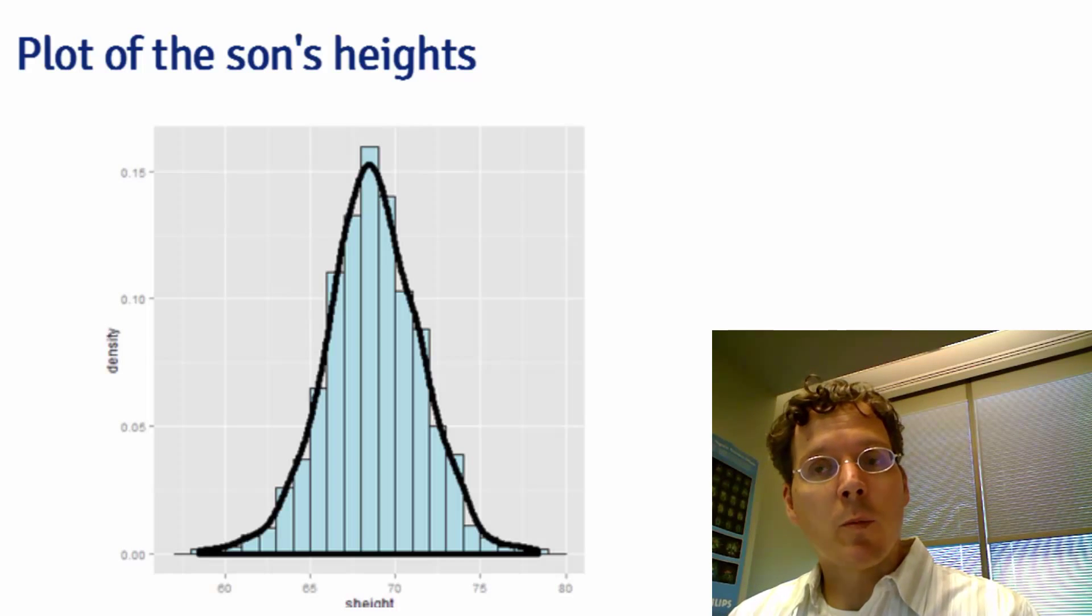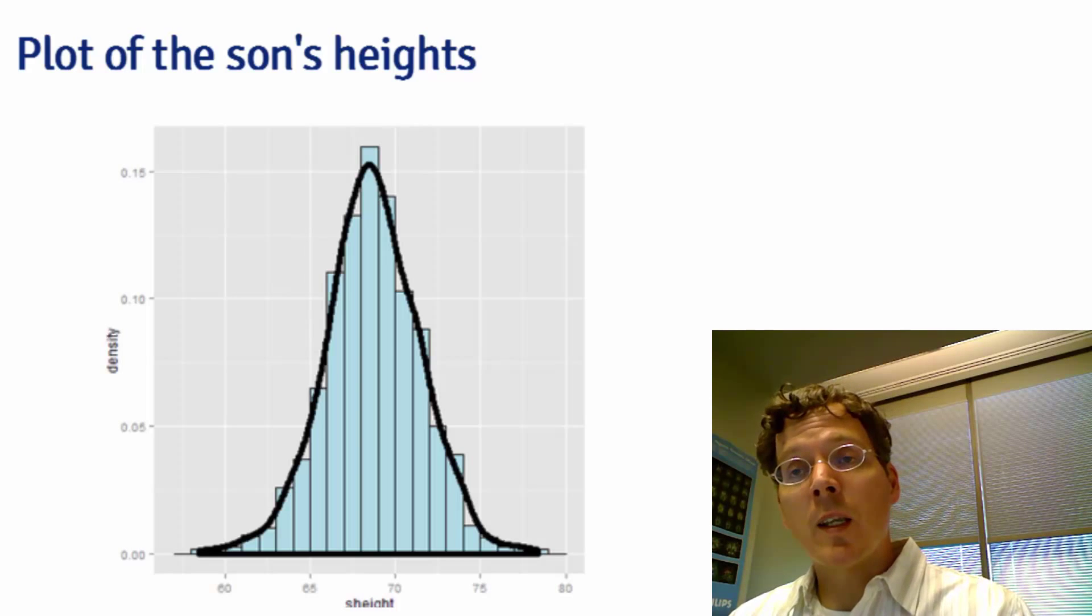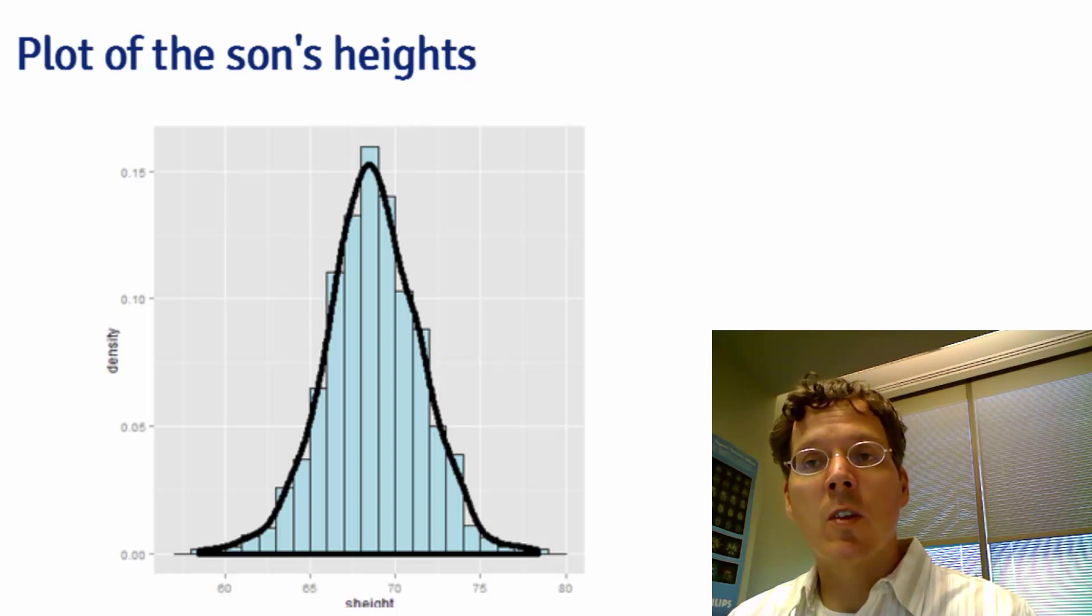Variability of this histogram, which is what the sample variance is calculating, it's estimating the variability of son's height from whatever population this was drawn from. Let's assume that it was a random sample.